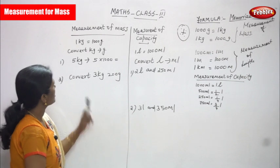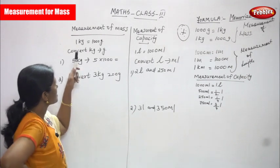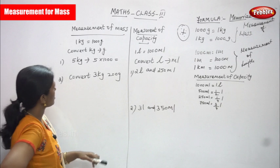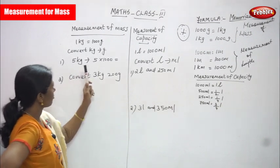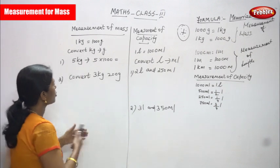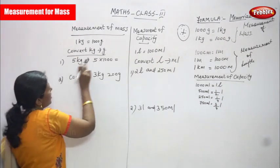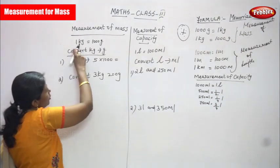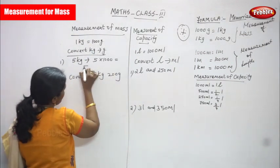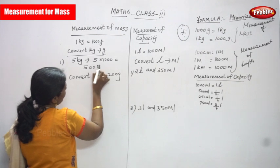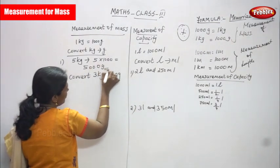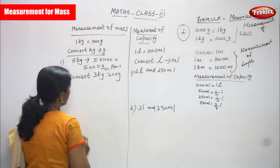Now we are going to see measurement of mass — converting kilogram into gram. So 1 kilogram is equal to 1000 gram. For example, 5 kilogram: 5 into 1000 gives the answer 5000. So 5 into 1 is 5, then add 3 zeros. The answer is 5000 gram.